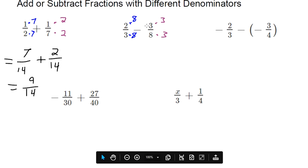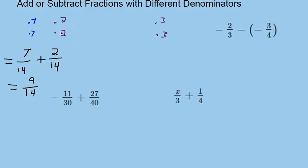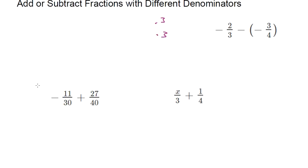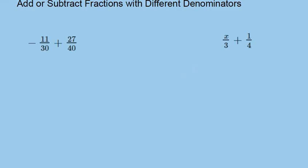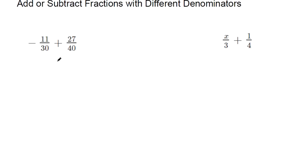Definitely pause that recording and go back if you need help with those. Let me clear the board so we can tackle the next ones. On to the next one, as Jay-Z said. So we've got negative 11 over 30 plus 27 over 40. In order to make those happen, we've got to have common denominators. Even though the numbers are big, you can still use the same process. List their multiples.